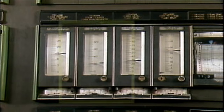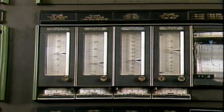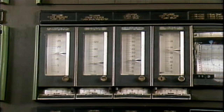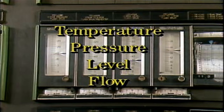Basically, a controller is a device that receives an input from another part of the instrumentation system, compares that input to a set point, and sends out a corrective signal to regulate the value of a process variable such as temperature, pressure, level, or flow.